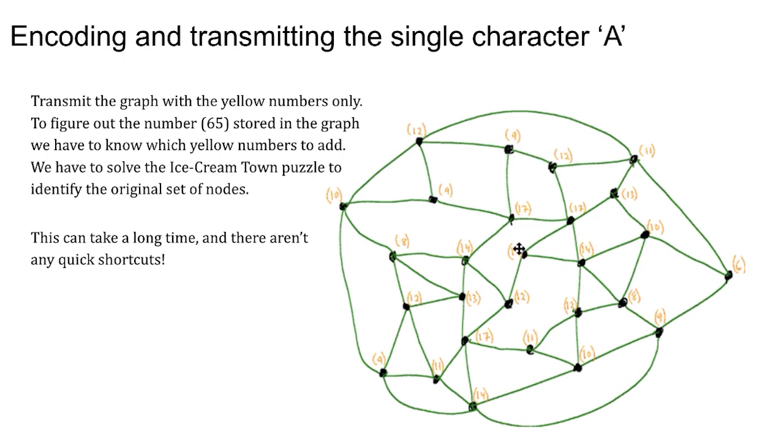So to identify the original set of those six nodes, we have to solve the puzzle to get that. So there aren't any quick shortcuts to finding it once we get to this point. This is an example of a one-way function. Easy to do in one direction, but very hard to do the other.